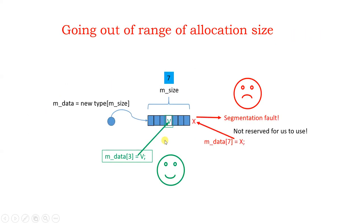When you create memory dynamically, you have a specific size. When you're within your size, life is beautiful. But if you go even one unit outside your memory size — if size is 7 and you say m_data[7] = x (because indexing starts at zero) — you're actually going one outside. Again you're out of bounds and you'll get a segmentation fault. That's something you have to be extremely careful about.